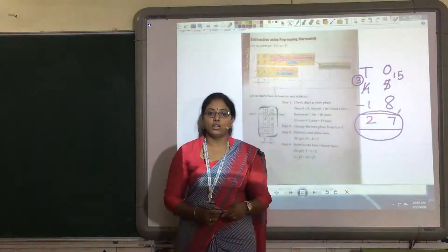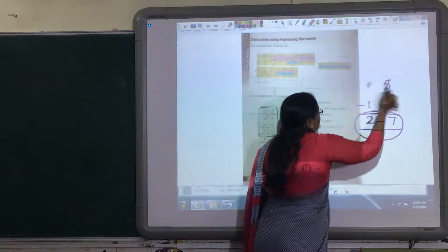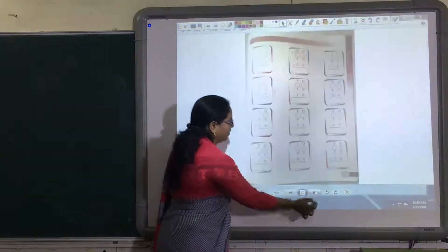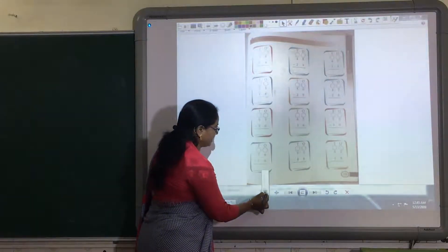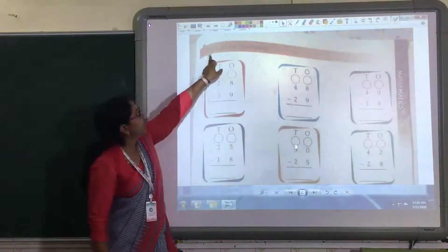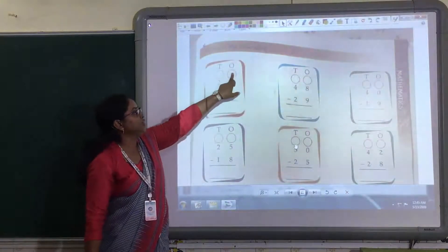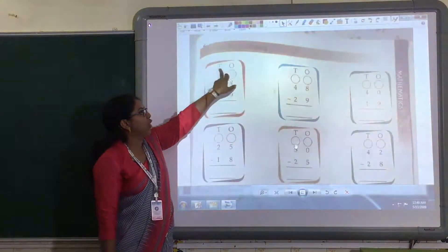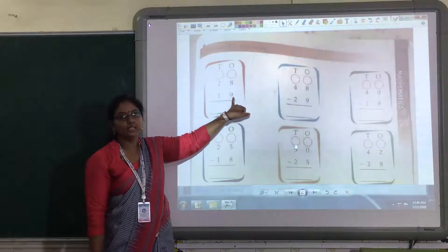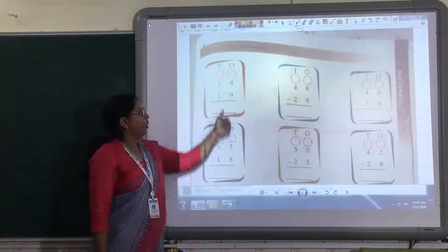That is known as difference. Same way children, we are going to solve the next sums in the chapter. Let us see. One more example I will give you. Already sums are given in your book. See children. This example I want to give. Subtract the following.